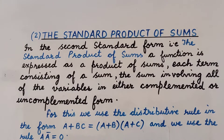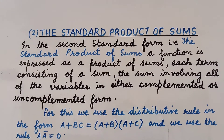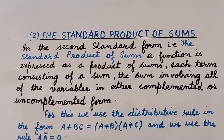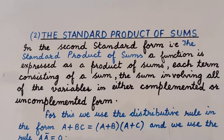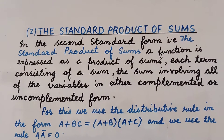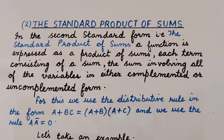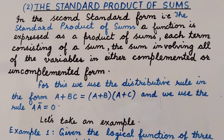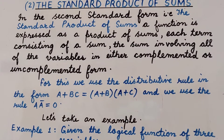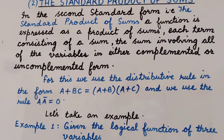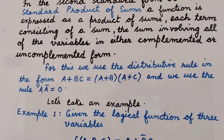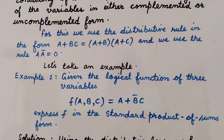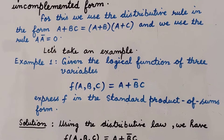In the standard product of sums form, a function is expressed as a product of sums, each term consisting of a sum of variables, with the sum involving all of the variables either in the complemented or uncomplemented form. For expressing any logical function in the standard product of sums form, we use the distributive rule: a + bc = (a + b)(a + c), and we also make use of the rule that a · a' = 0.